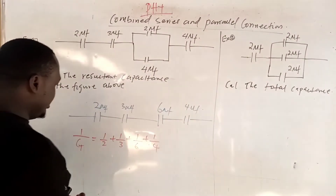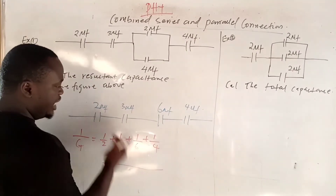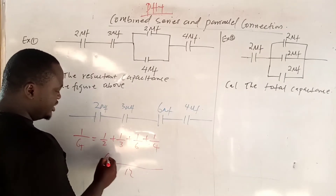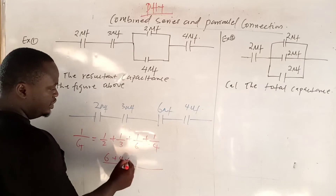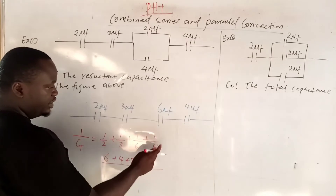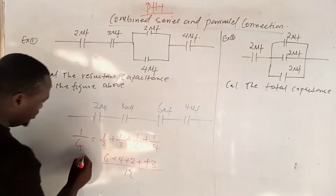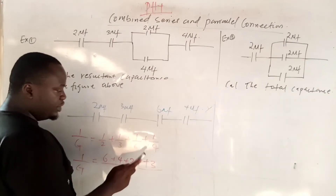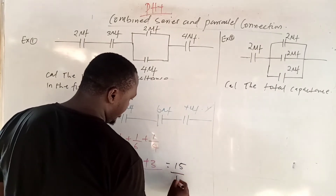Now the effective capacitance: the total capacitance will be 1/CT = 1/2 + 1/3 + 1/4 (for the series portion). The LCM here is 12. 2 into 12 gives 6, 3 into 12 gives 4, 6 into 12 gives 2. So this gives you 6 plus 4 plus 2 plus 3 — this will give you 15 all over 12.